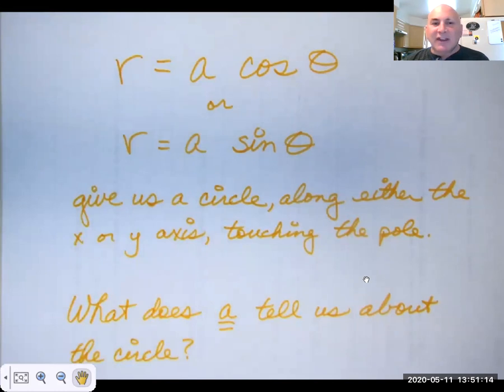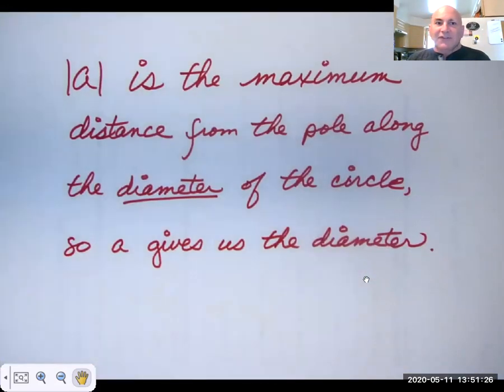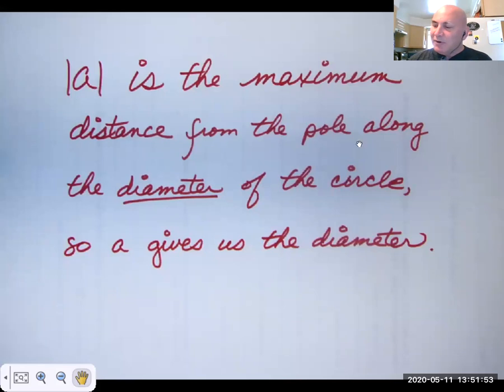What does a tell us about that circle? I'll give you a hint. Is a the radius, the diameter, or the circumference? Well, since a is the maximum distance from the pole along the diameter of the circle, a gives us the diameter. How would you make a circle that was on the left side of the pole touching the pole? Think about that. Or underneath the pole touching the pole. Notice I put up here the absolute value of a. So that probably gives you the answer anyway.